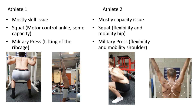To summarize, athlete 1 seemed to have more skill-related issues, whilst athlete 2 seemed to have more capacity-related issues. However, these had a large crossover, as we have discussed throughout this vlog.